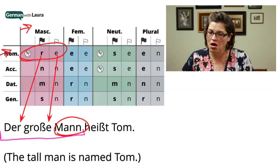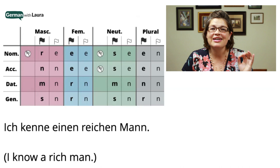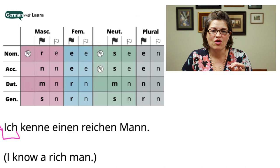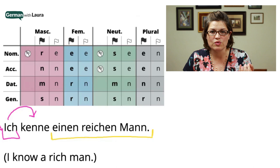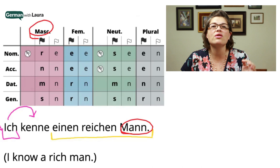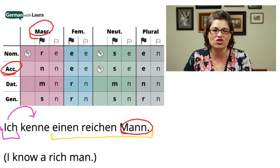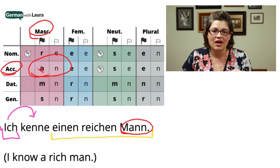Second example — 'Ich kenne einen reichen Mann,' I know a rich man. The nominative case is 'ich' followed by the verb, then we use the accusative case for the next noun. We still have a masculine noun since we're still working with 'Mann,' so we're still in the masculine column, but now in the accusative case. We've shifted to a new section in the all-in-one declension chart, and we can see the declensions: N and N.